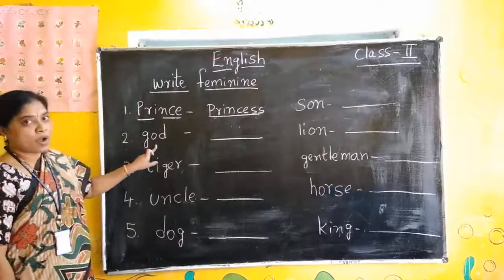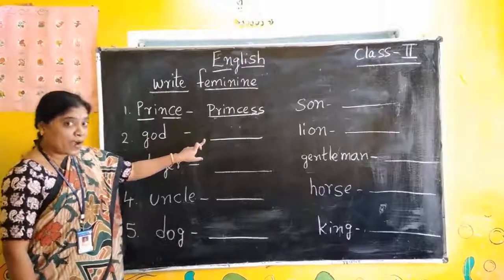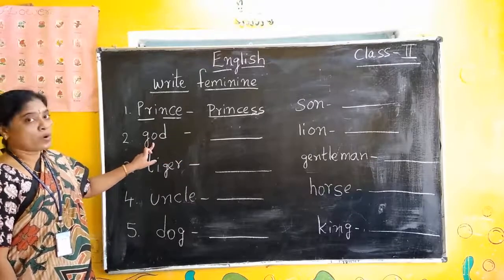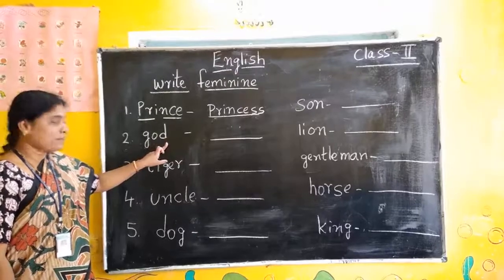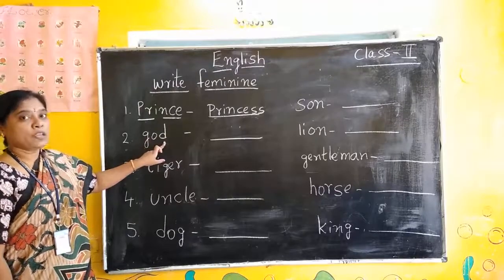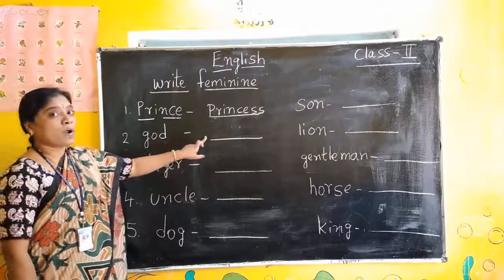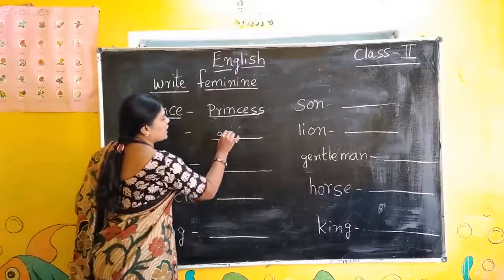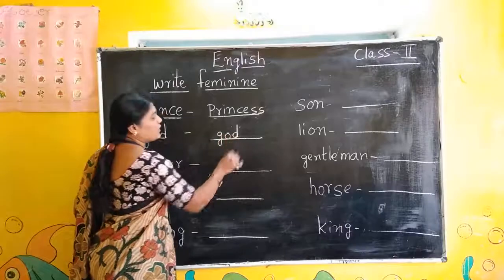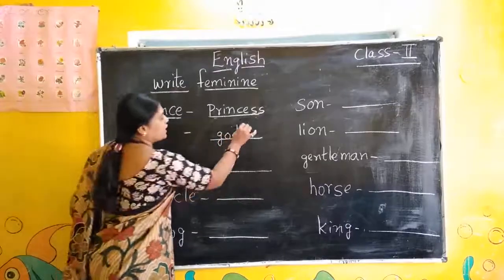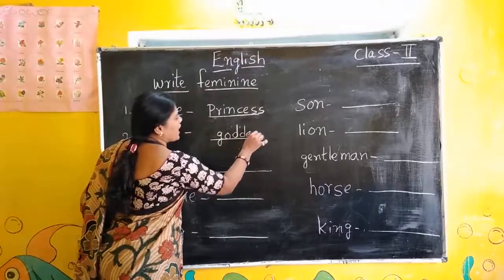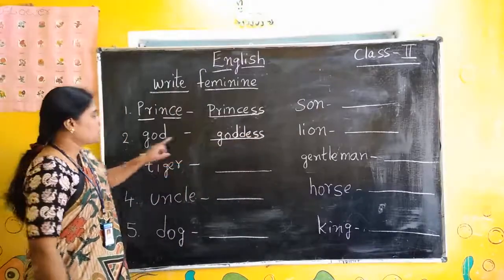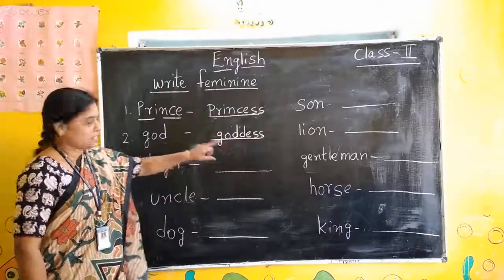Second: God — Goddess. Read the spelling. G-O-D, God. Goddess: G-O-D-E-S-S, Goddess. In God we are writing G-O-D, then add D-E-S-S. Goddess.